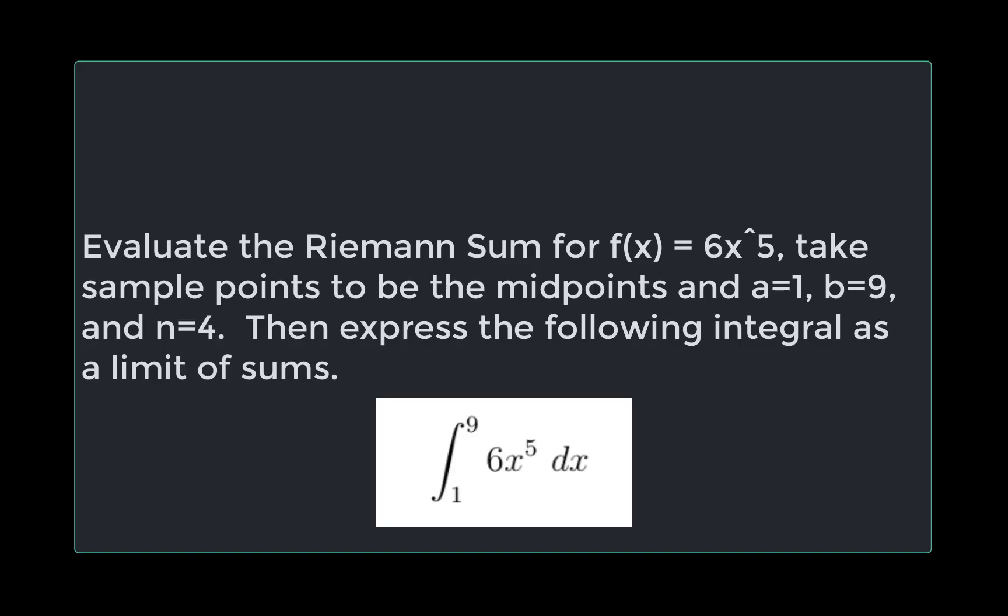The question we're working on today is: evaluate the Riemann sum for f(x) = 6x^5. Take sample points to be the midpoints, and a = 1, b = 9, and n = 4.